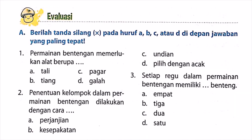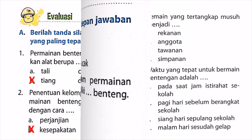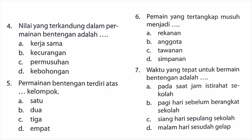Evaluasi bagian A. Satu, permainan bentengan memerlukan alat berupa tiang. Dua, penentuan kelompok dalam permainan bentengan dilakukan dengan cara kesepakatan. Tiga, setiap regu dalam permainan bentengan memiliki satu benteng. Empat, nilai yang terkandung dalam permainan bentengan adalah A. kerjasama — jawabannya A, kerjasama.